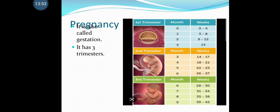The third trimester starts from the 27th week till parturition. The fetus grows to about 3 to 4 kg in weight and 50 centimeters in length. Eyes are open and there is gain in body weight. As the fetus grows, the uterus expands, and the mother's abdominal organs become compressed and displaced, leading to frequent urination, digestive blockages, and strain in the back muscles. At the end of the third trimester, the fetus is fully developed and ready for parturition — birth.